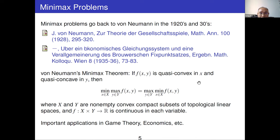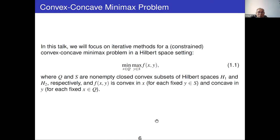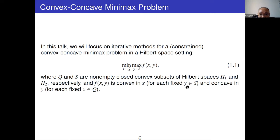Von Neumann's minimax theorem had many important applications in game theory, economics, and so on. Today I'm going to focus on iterative methods for solving this minimax problem. Given a function f of x and y, we want to first maximize in y and then minimize. We have constraint sets Q and S, which are closed convex subsets of Hilbert spaces H1 and H2 respectively. I consider the convex-concave case: f is convex in x for each fixed y, and concave in y for each fixed x.